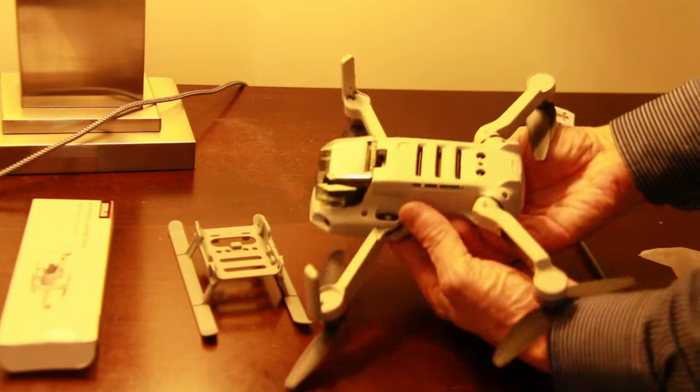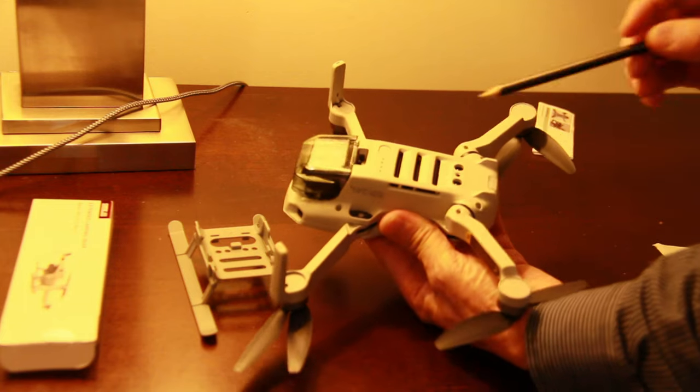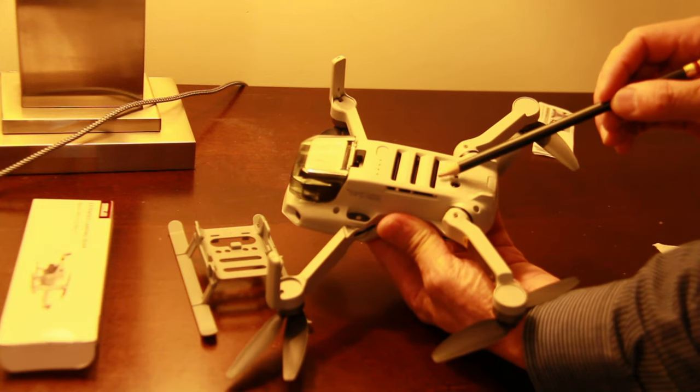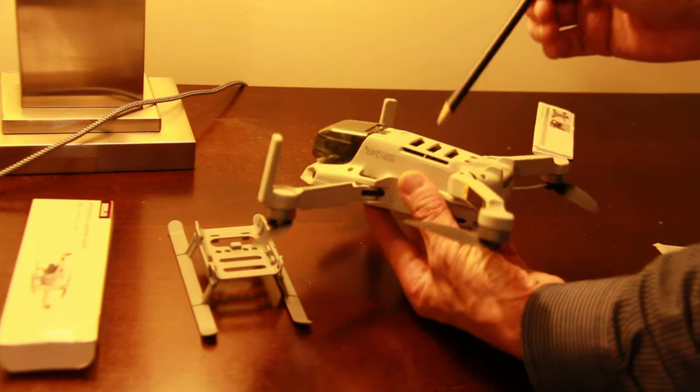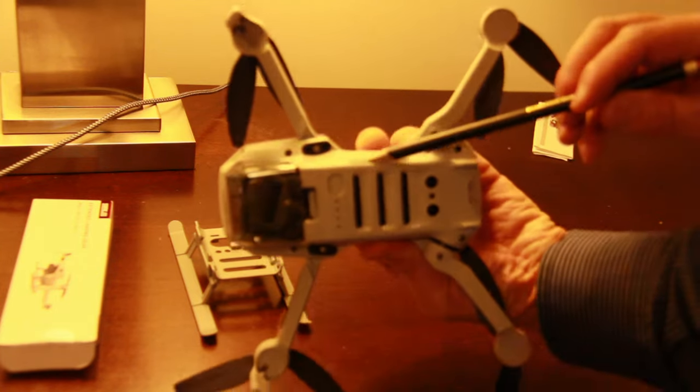Let's look at the drone, the DJI Mini 2. There are three grooves on the bottom, this side two grooves, this side, and the other side is another two grooves here.